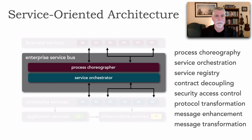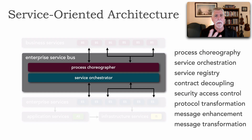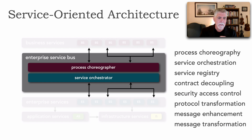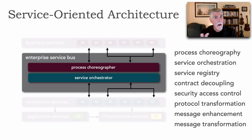The enterprise service bus, the message bus part of SOA, is what provided all that level of abstraction. It did message enhancement, message transformation, and protocol transformation. It decoupled contracts, allowing a RESTful request to invoke COBOL code in a mainframe, RPG code in an AS/400, or other kinds of platforms. This is also where service registry functionality and security lived, and both choreography and orchestration existed in different contexts within the enterprise service bus.